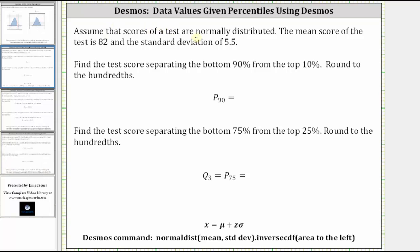Assume that scores of a test are normally distributed. The mean score of the test is 82 and the standard deviation is 5.5, which means you know mu is equal to 82 and sigma is equal to 5.5.